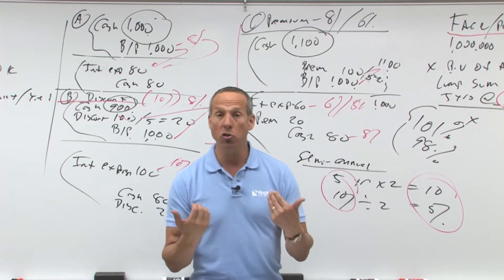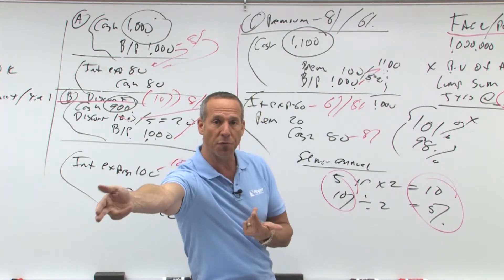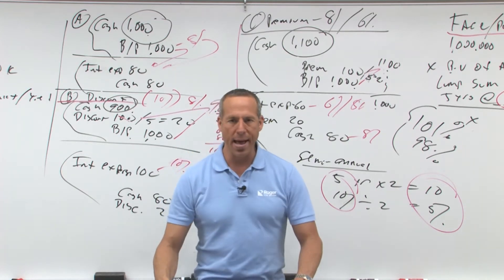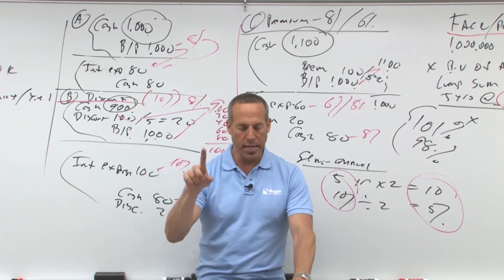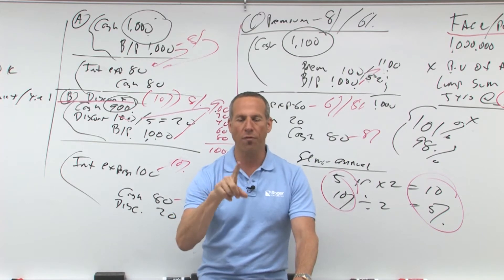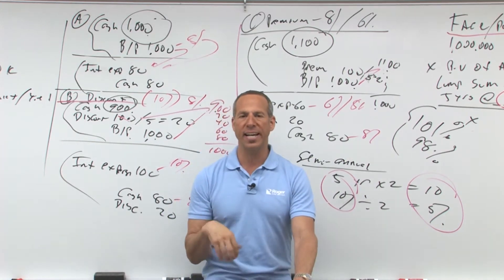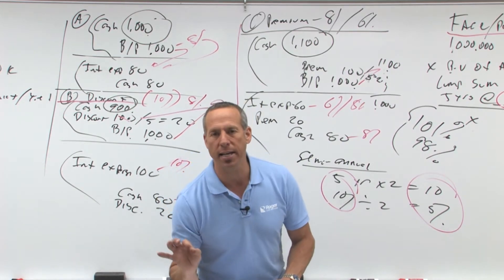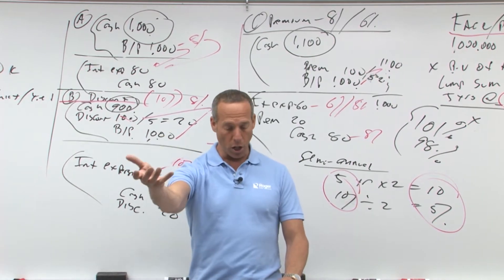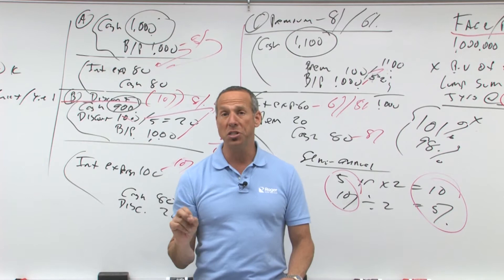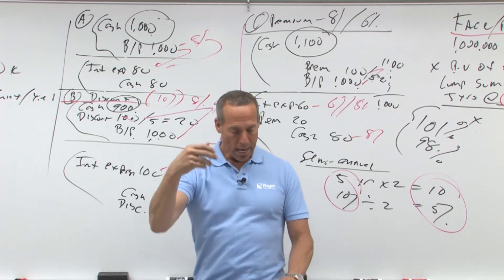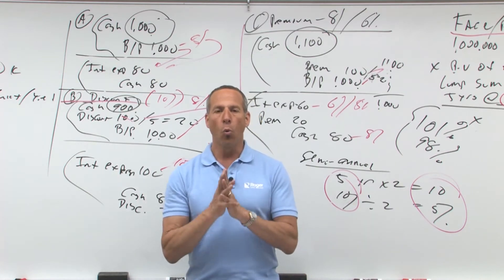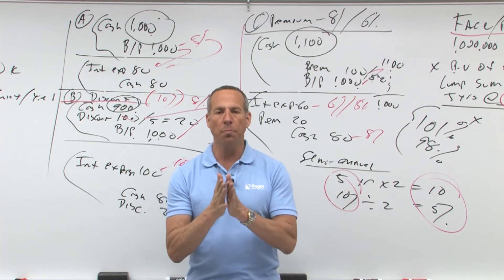We don't use future value as much. We use present value, because we want to say how much is that money in the future worth today? Present value of a dollar — how much do I have to put in the bank and it'll grow? In other words, a dollar in a year is worth what today? So if I get a dollar in a year, what do I have to put in the bank today at 10% for it to grow to a dollar? That's what we're looking at — the present value of a lump sum is how much today.